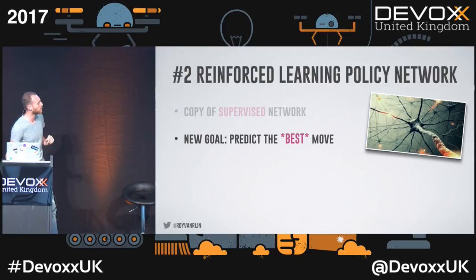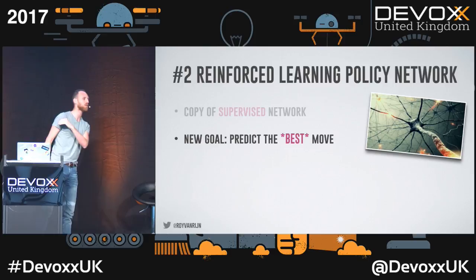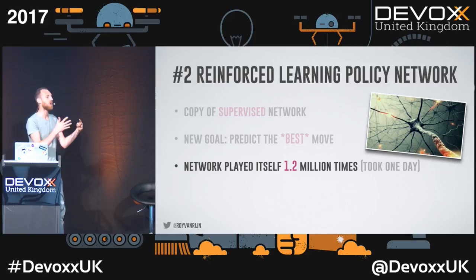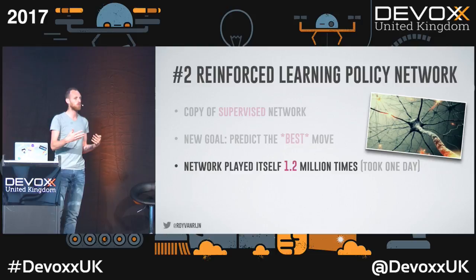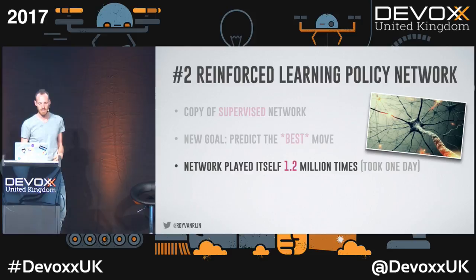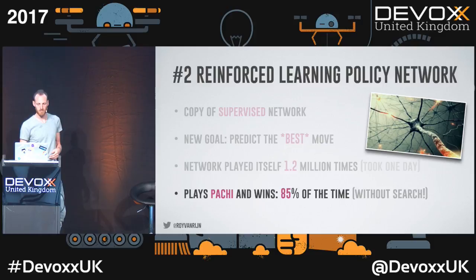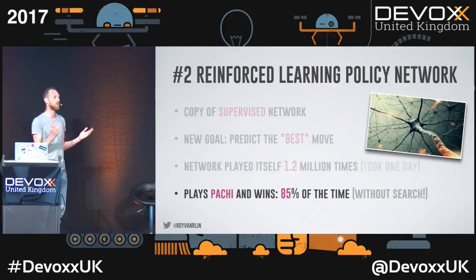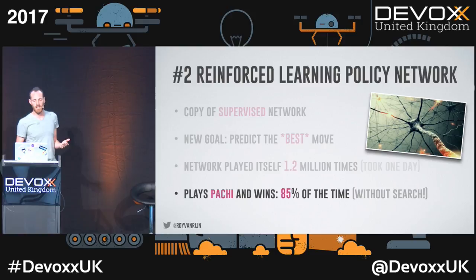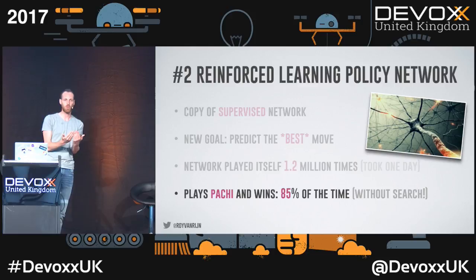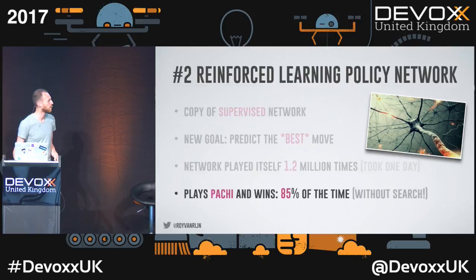The second neural network: they took a copy of the supervised network and set it a new goal — predict the best move, not the amateur move. This network played itself. Small variations of itself were playing each other, and the one with the better move got better; the other died. Using self-play, they tried to find the best move instead of predicting what an amateur did. Then they played against Pachi, a Go AI using Monte Carlo Tree Search. The second network could win 85% of the time — just give it a board position, predict the next move. Pretty impressive.